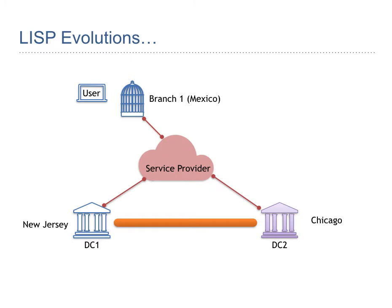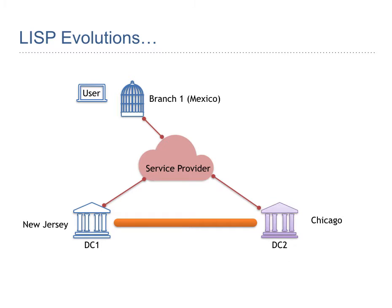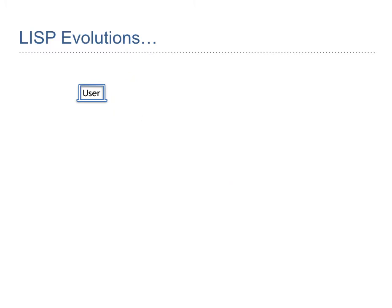Everything would be automated, where the optimum path is identified automatically with the concept of LISP. That's where the LISP evolution happens — not denying that OTV or VXLAN are not good technologies, they are good, but that's why LISP is required. As shown: VM crashes in DC1 but the gateway is still in DC1, so traffic is hopping between DC1 and DC2 impacting performance. If DC1 goes down, you have a massive outage — LISP automatically handles this.